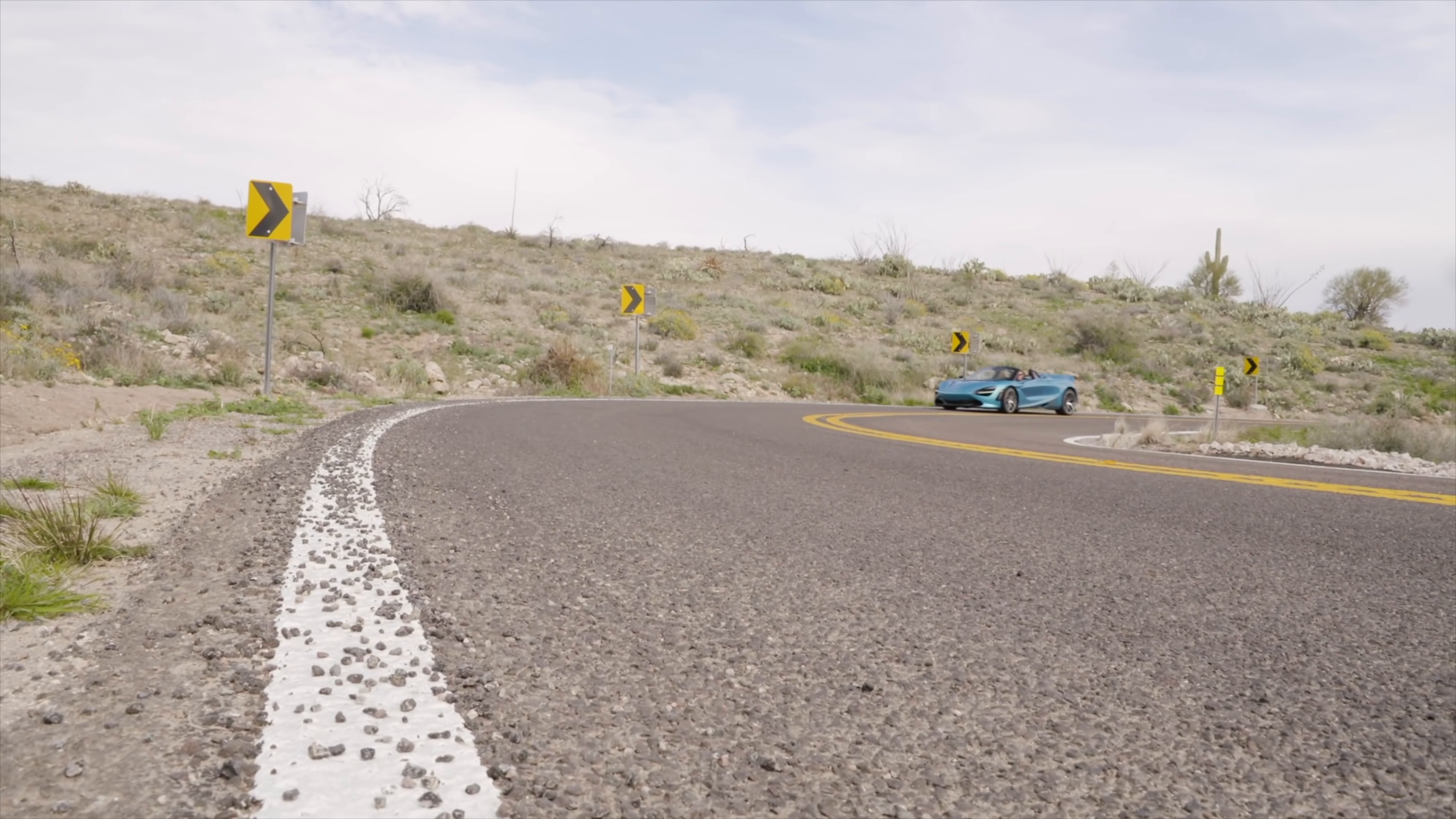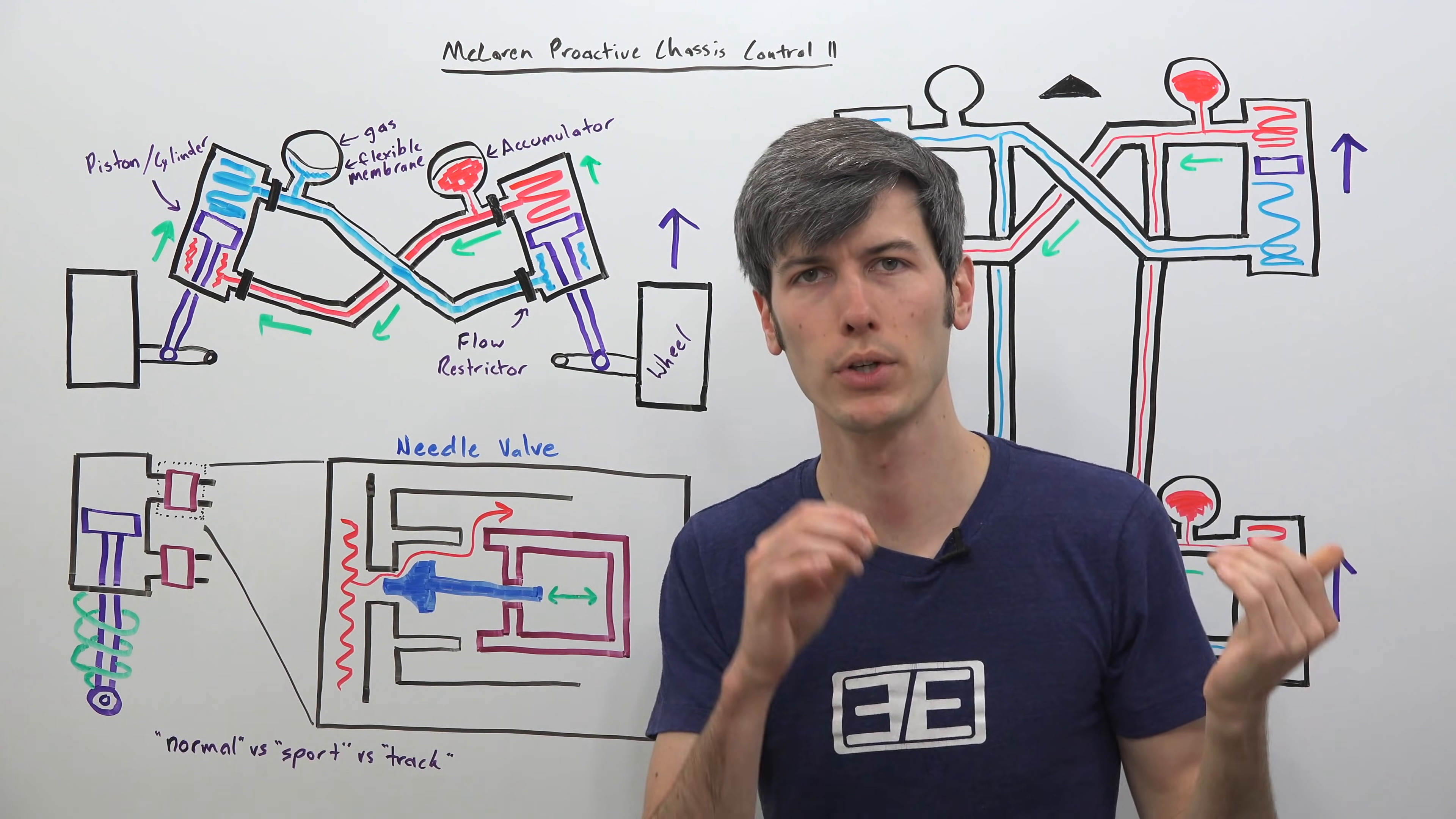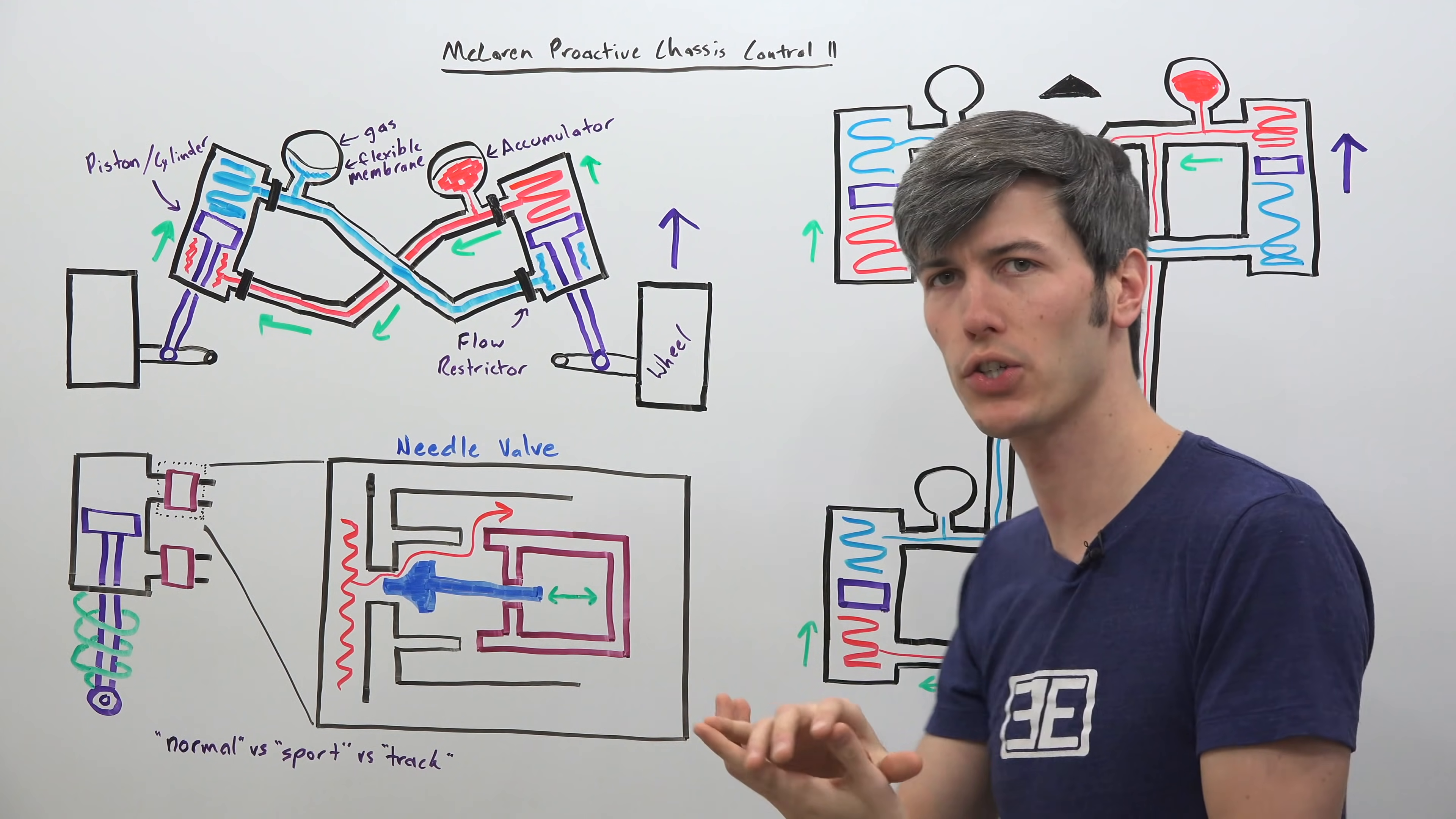Now a critically important component of this suspension are these flow restrictors which you'll notice are at the exits of each of these pipings here which travel across. So these flow restrictors are changing the rate at which you allow fluid to exit from here to enter this other section, so changing the rate at which you allow fluid to either enter other cylinders or to accumulate within this accumulator.